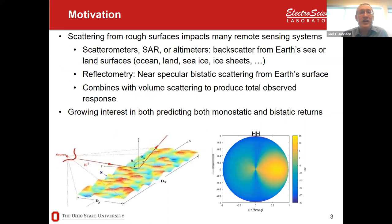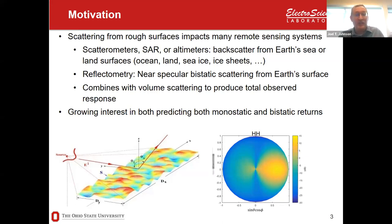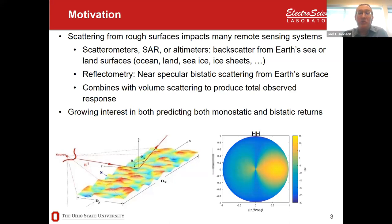The motivation here is rough surface scattering. In the world of microwave remote sensing, scattering from rough surfaces impacts a lot of our measurements. We have synthetic aperture radars, scatterometers, altimeters measuring backscatter from Earth's surface — like the ocean, land surface, ice surface. We also have reflectometry where we measure specular scattering. Surface scattering is just part of the picture — we also have volume scattering — but the surface scattering is an important part, and that's our focus today.